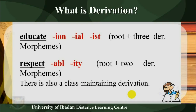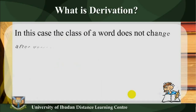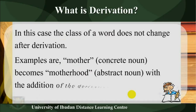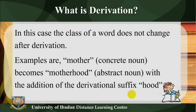There is also class-maintaining derivation. In this case the class of a word does not change after derivation. For example, 'mother' (concrete noun) becomes 'motherhood' (abstract noun) with the addition of the derivational suffix -hood. The word remains a noun.